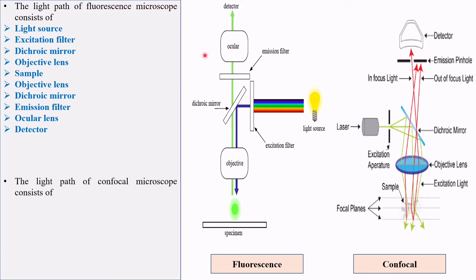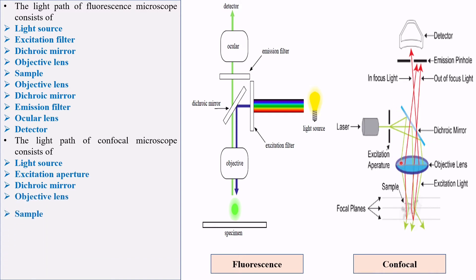And the detector. The light path of confocal microscope consists of light source, excitation aperture, dichroic mirror, objective lens, sample, objective lens, dichroic mirror, emission pinhole, ocular lens, and the detector.